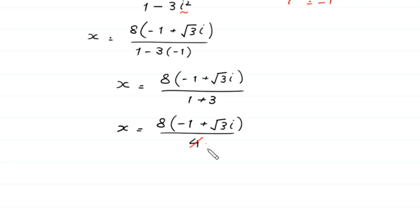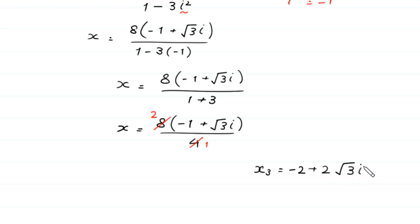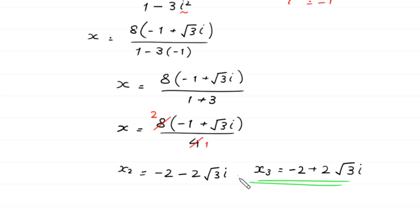So 4 goes into 8 two times, giving us the third value of x. x₃ equals 2 times negative 1 equals negative 2, plus 2 times square root of 3i, so x₃ equals negative 2 plus 2 square root of 3 times i. The value of x₂ is negative 2 minus 2 square root of 3i, and x₁ equals 4. These are the three solutions of this equation.